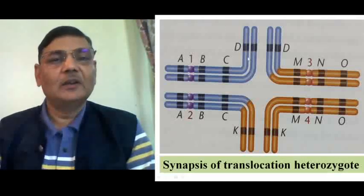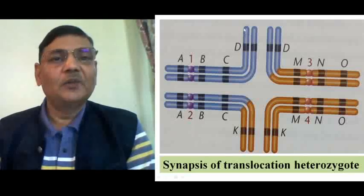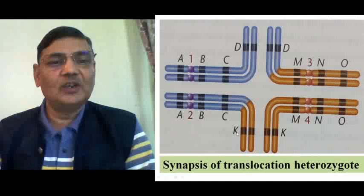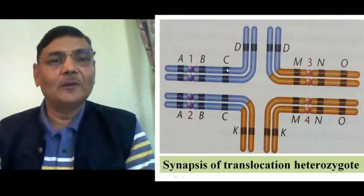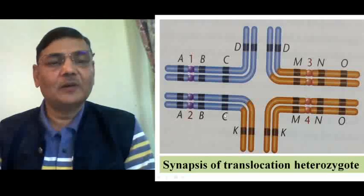If chromatids segregate in an alternate manner, the resulting gametes will be of normal genotype. If adjacent chromatids go together, the gametes will be abnormal. For example, if the chromosome with genes A, B, C, D goes with the adjacent one carrying A, B, C, and K, the resulting gamete will be abnormal — it will have A, B, C, D on one chromosome, but the other chromosome will lack genes M, N, O, and A, B, C will be in duplicated form. There will be duplication and deletion of genes, making such a gamete non-viable.